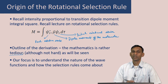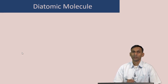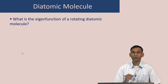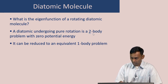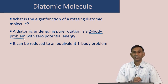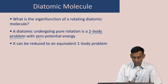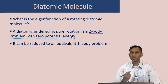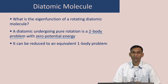We consider the simplest rotating chemical system, namely a rotating diatomic molecule. The question then is what are the eigenfunctions of a rotating diatomic molecule? We have to keep in mind that a diatomic undergoing pure rotation is a two-body problem which is in motion, but there is zero potential energy. So the only energy of this two-body system is the kinetic energy of rotation.